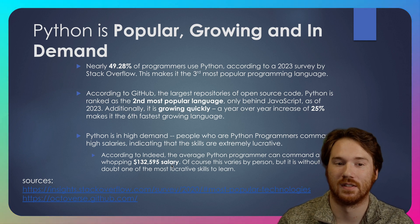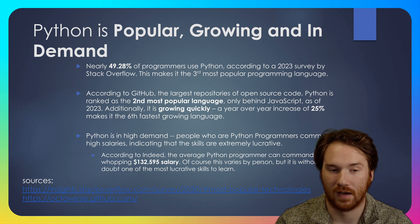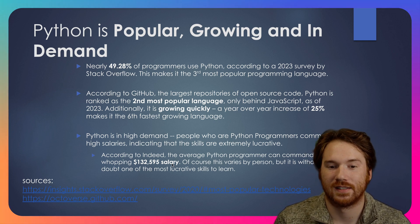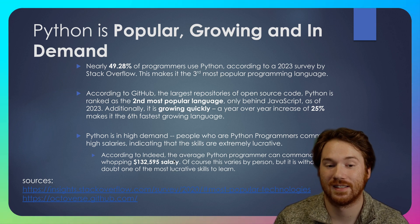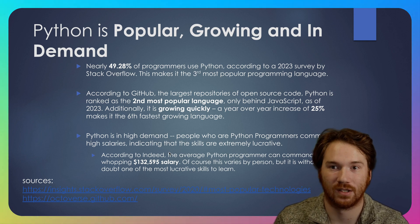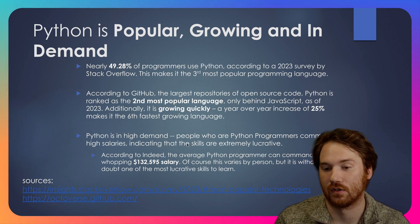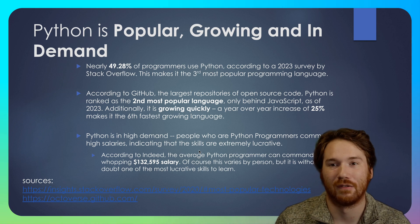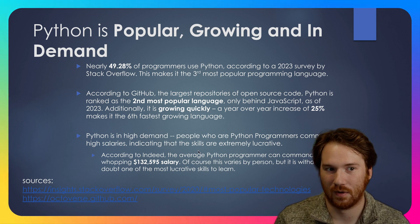Python is popular, growing, and in demand. According to a 2023 study by Stack Overflow, 49.28% of programmers use Python, making it the third most popular programming language. According to GitHub, Python is ranked as the second most popular language, only behind JavaScript as of 2023, with a year-over-year increase of 25%, making it the sixth fastest-growing language — huge considering it's already the second most popular. Python is also in high demand: according to Indeed, the average Python programmer commands a salary of $132,592 on average, making it without a doubt one of the more lucrative skills to learn.